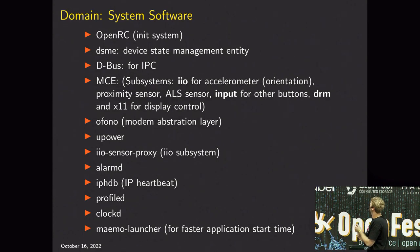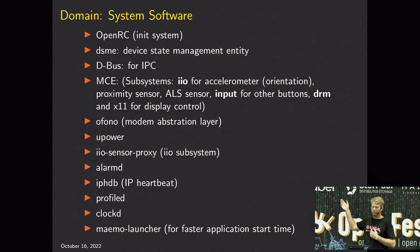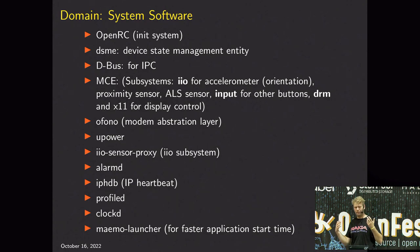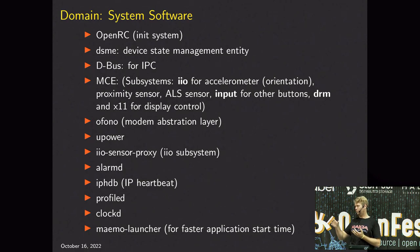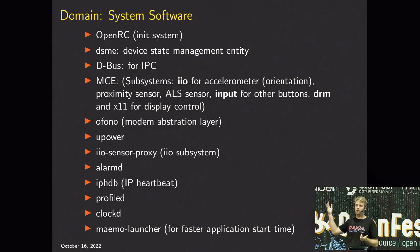Upower is not something we wrote - Ofono is also maintained by others, but we contribute patches. Upower is a freedesktop project providing a D-Bus interface around batteries. If you want to know if you're plugged into power, if you want to know how much battery capacity you have, or what the average power drain is over the last five minutes, Upower will tell you. We have a battery app that talks with Upower over D-Bus to show what's going on on the phone.